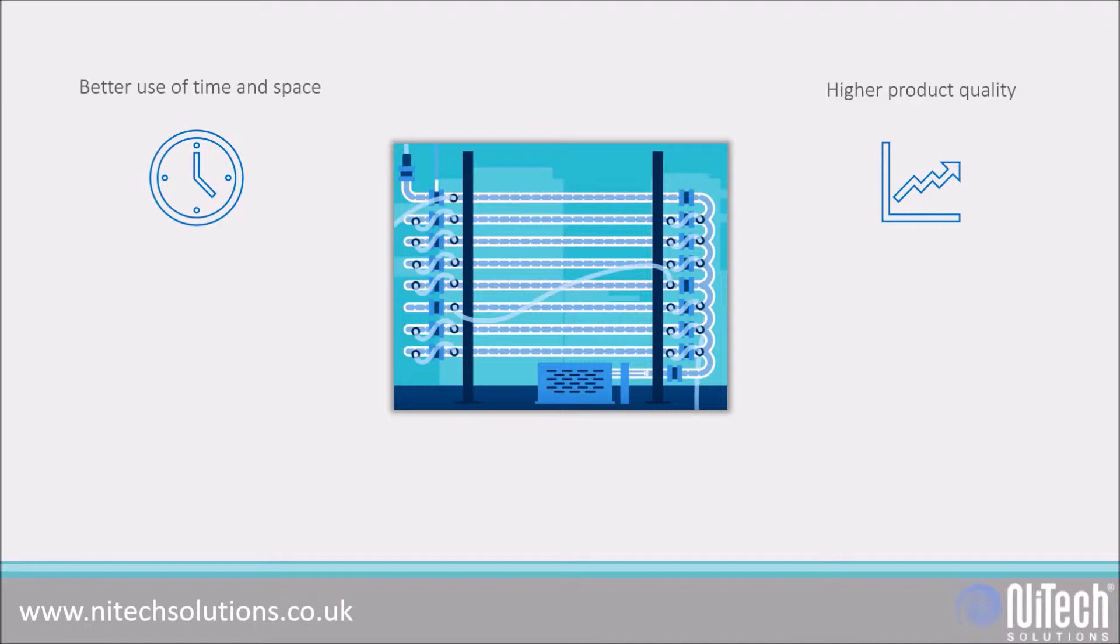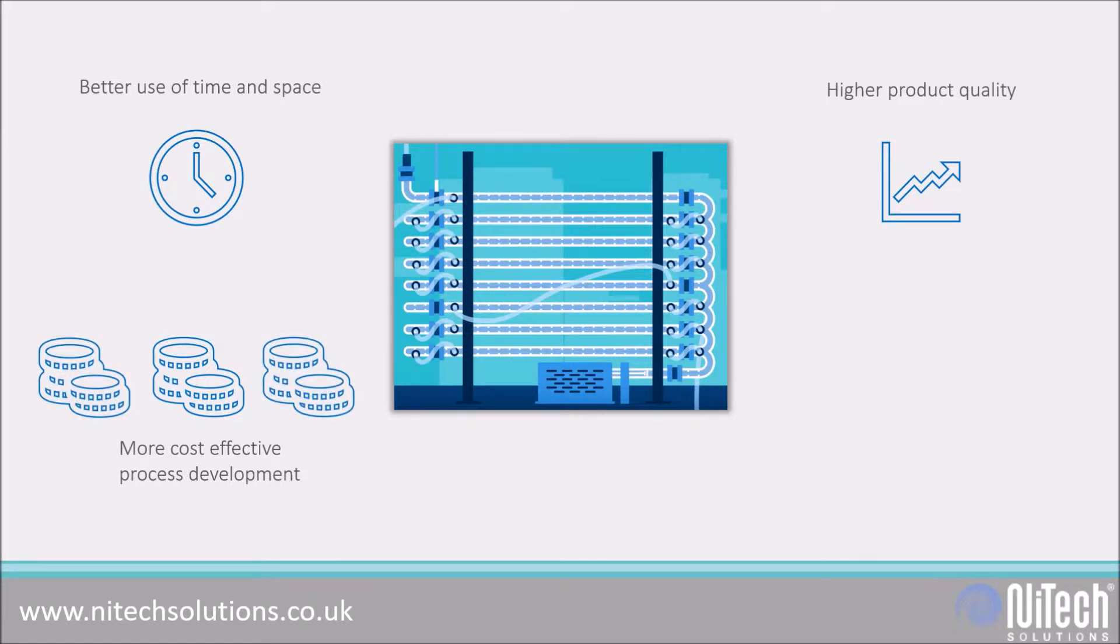Production can be more cost effective due to reduced capital and operating costs resulting from the compact nature of equipment. Energy use is more efficient and maintenance is simpler and cheaper due to the components used.